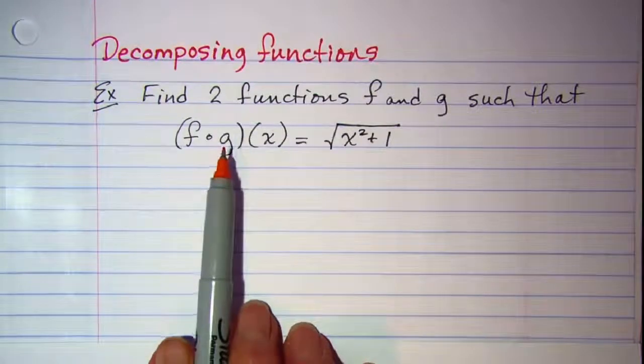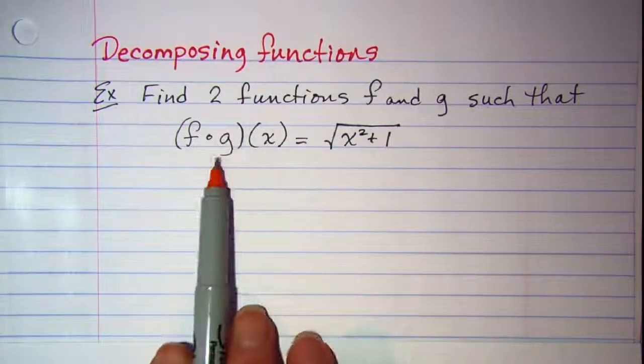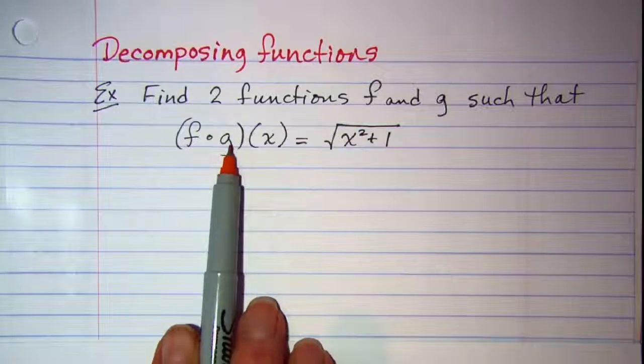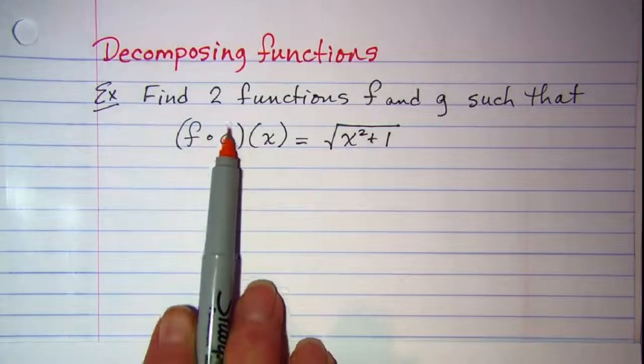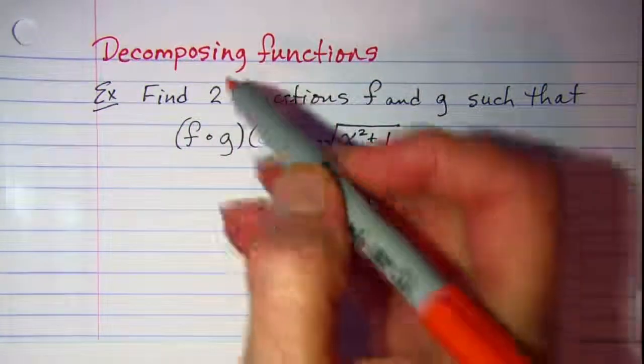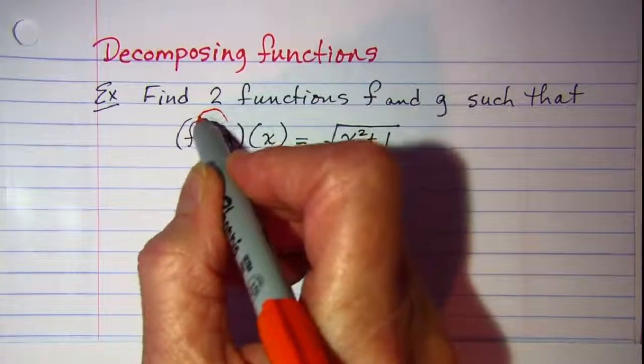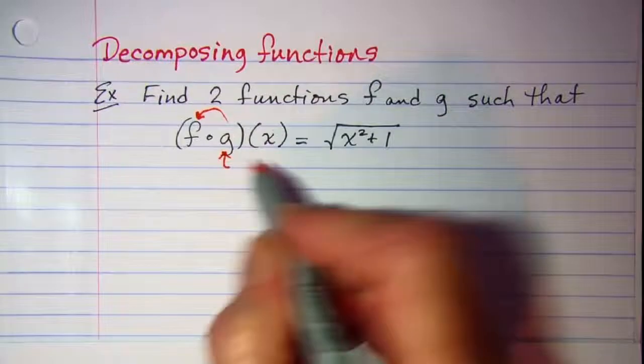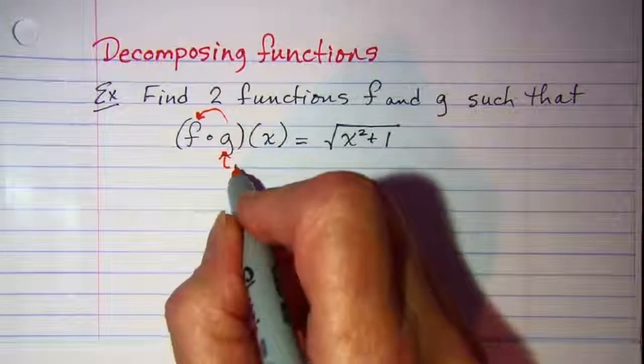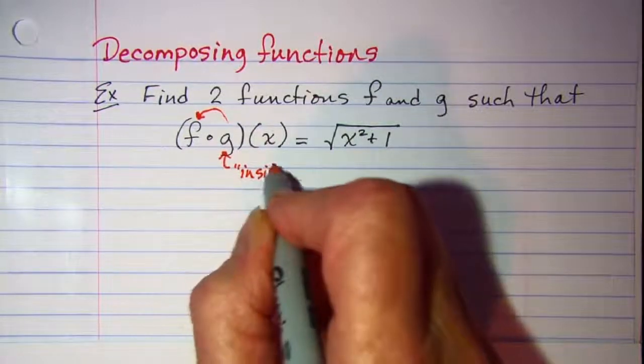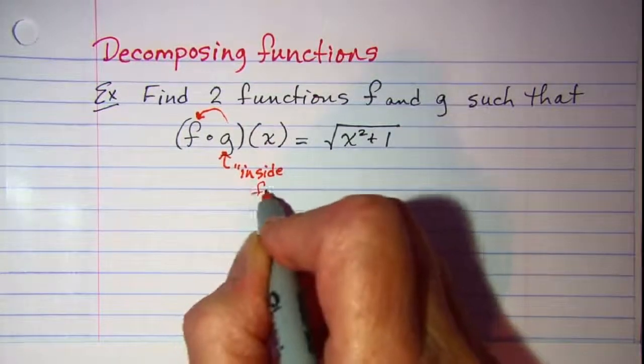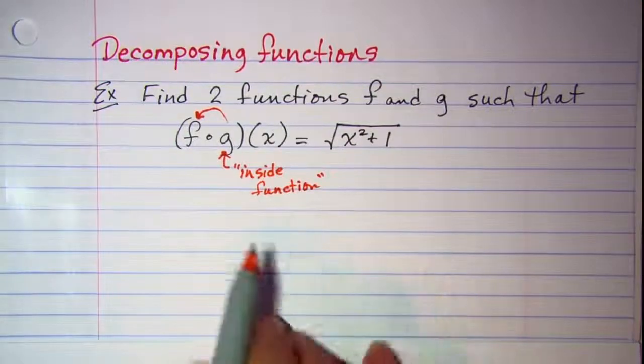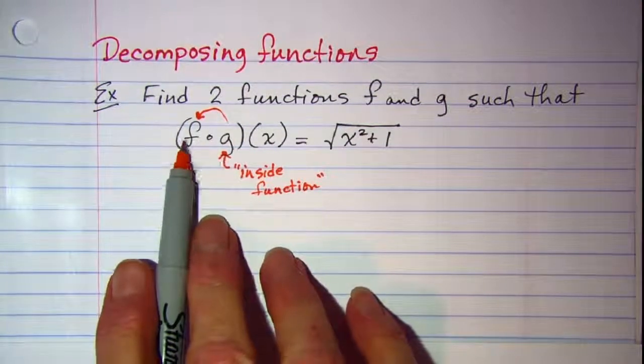Now recall that when you do a composition of two functions, this second function, the second one that's written, is substituted into the first function, so g is going to be substituted into f. We can think of this second function, this g function, as my inside function, and then this f is going to be the outside function.